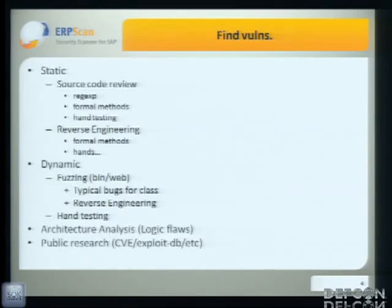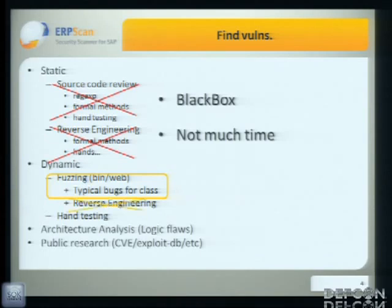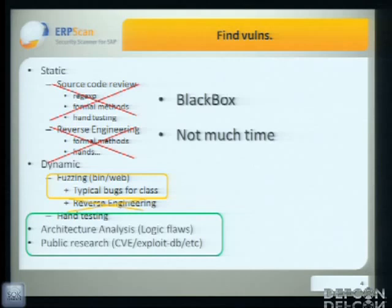So we couldn't use all bug-hunting methods like source code review, because it usually takes a lot of time and requires source or reverse engineering. We could use a little bit of fuzzing if you have a verb or binary. Usually we can use logic — looking for logic flaws and searching bugs in public research. I would like to show that using public research, like old bugs, old research, old information, and a little bit of analysis, we can find new bugs.